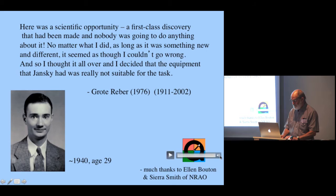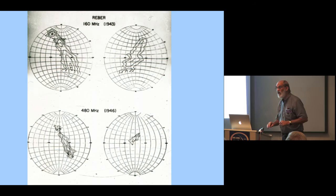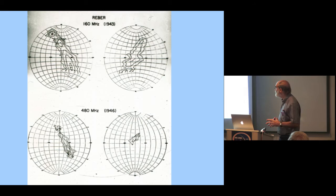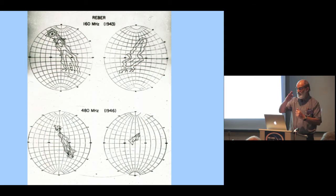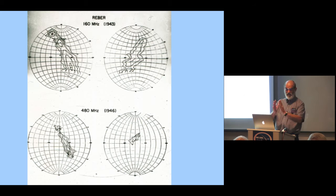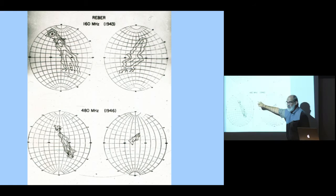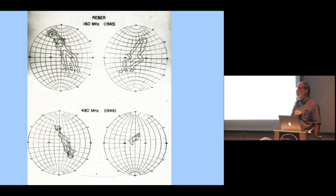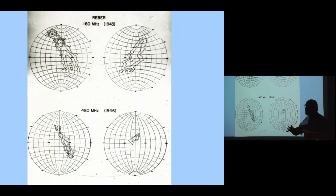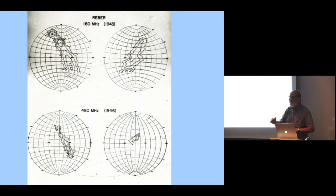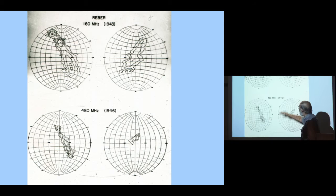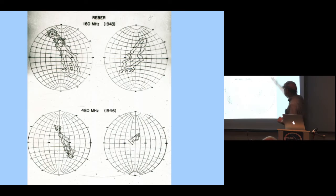Reber was working at Chicago area radio firms during the war, then observing at night when there was less interference in suburban Chicago. At first recording an ammeter reading every minute, then using a strip chart recorder that could record by itself for a few hours. He started at 3,300 megahertz in 1939 and found nothing. He went down to 900 megahertz—still nothing. He finally got down to 160 megahertz and found it, then went back up to 480 megahertz with a more sensitive receiver.